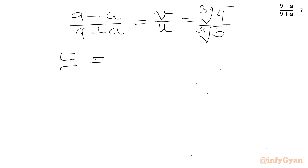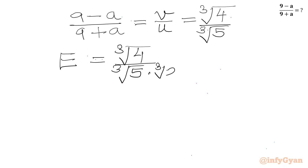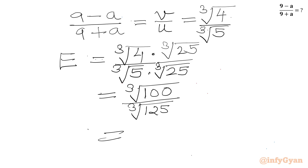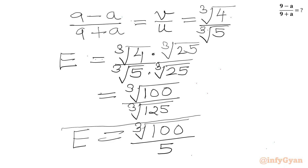So LHS will be our required expression e, and RHS is cube root of 4 over cube root of 5. Let us rationalize the denominator. So I will multiply numerator and denominator by cube root of 25. So I can write cube root of 4 times 25 is 100, over cube root of 5 times 25 is 125. So our answer will come out: expression e will be cube root of 100 over 5, since cube root of 125 is 5. So this is our final answer.